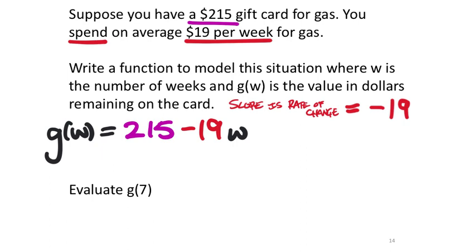But it doesn't have to be on these word type problems. You could have also written it, and this would be the same, it would give you full credit. In formal slope-intercept form, which would have been negative 19W, and then plus 215.